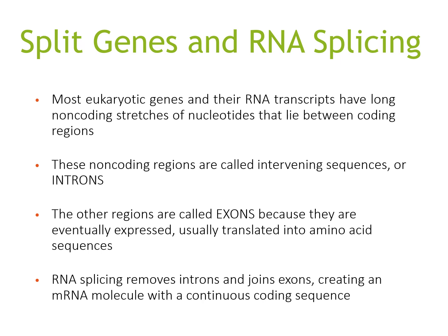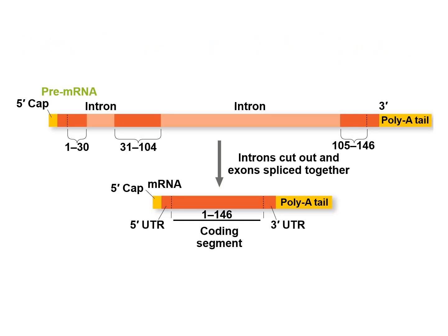Most eukaryotic genes and RNA transcripts have long non-coding stretches of nucleotides between coding regions. These non-coding regions are called intervening sequences or introns. The other regions are called exons because they are eventually expressed and translated into amino acid sequences. So introns are non-coding DNA and exons are coding DNA. RNA splicing removes introns and joins exons, creating an mRNA molecule with a continuous coding sequence. You can see a diagram showing the 5' cap, intron, exon, intron, exon, and poly-A tail — the introns are cut out and the exons are spliced together.